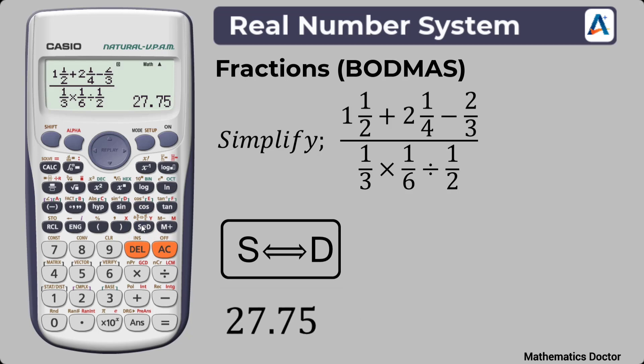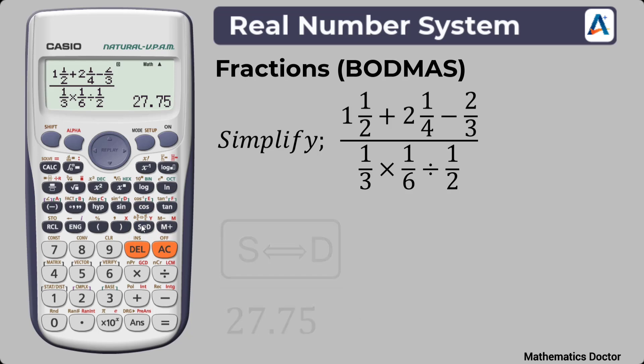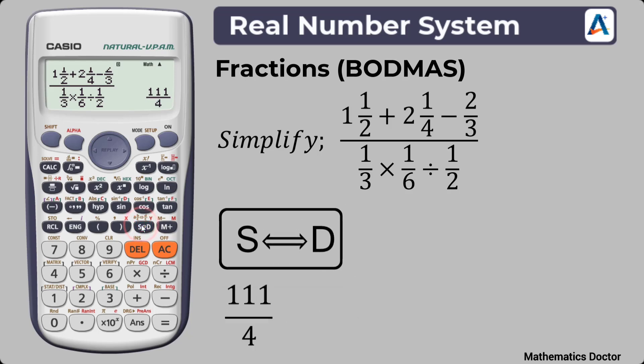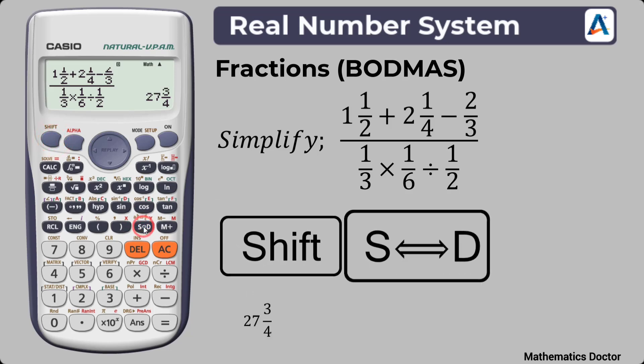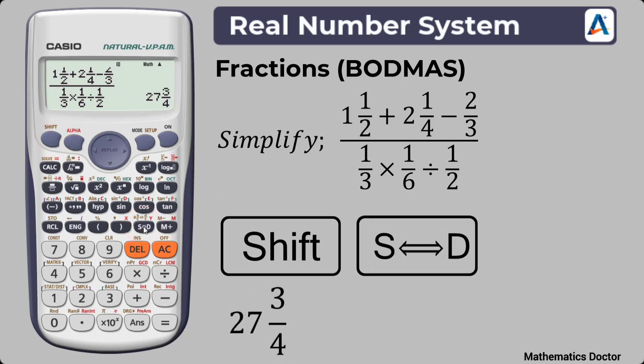The final answer is 111 over 4, or equivalently the mixed fraction 27 whole number 3 over 4, or the decimal 27.75. Thank you very much.